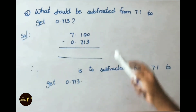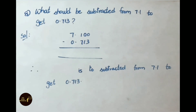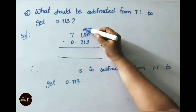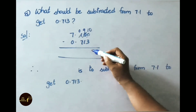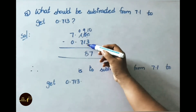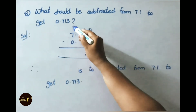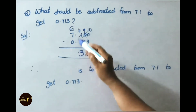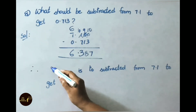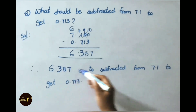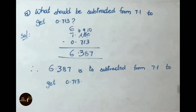Now let us do subtraction of 7.100 minus 0.713 with borrowing. From 0 we can't subtract 3, so we borrow: 0 becomes 10, the next 0 becomes 9, and 1 becomes 0. 10 minus 3 is 7, 9 minus 1 is 8. From 0 we can't subtract 7, borrow again: 7 becomes 6, 0 becomes 10. 10 minus 7 is 3, 6 minus 0 is 6. So the answer is 6.387. Therefore 6.387 is to be subtracted from 7.1 to get 0.713.